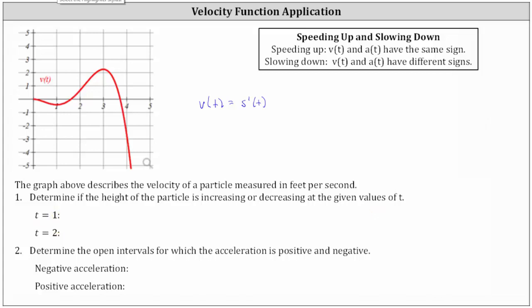If we locate the point on the graph of v of t when t is equal to one, we have this point here where the velocity function value is negative, and therefore at t equals one the height is decreasing. Now let's look at the point on the graph where t equals two. The point on the velocity function when t equals two is this point here, where the velocity function value is positive, which indicates the height is increasing at t equals two.